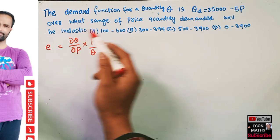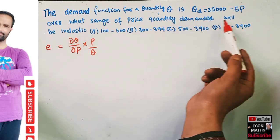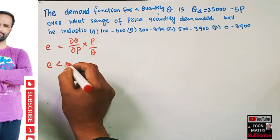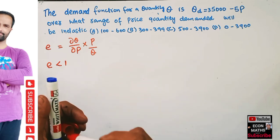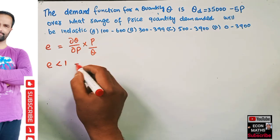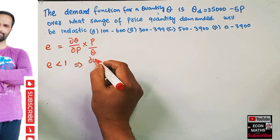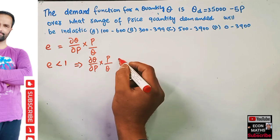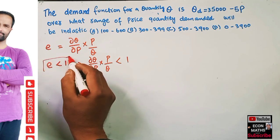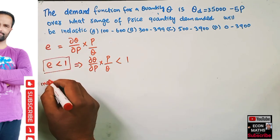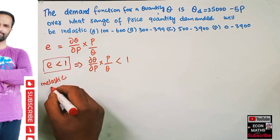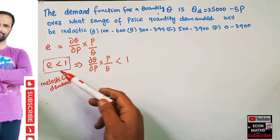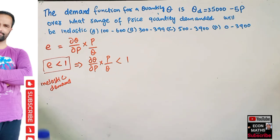We have to find out the range where our quantity demanded will be inelastic. By inelastic we mean our elasticity E should be less than 1. This implies that dQ/dP multiplied by P upon Q should be less than 1, which denotes inelastic demand.